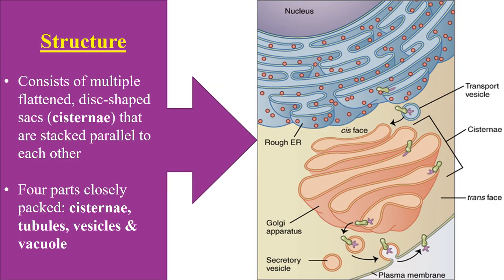Now let's understand the structure of the Golgi apparatus. We know that proteins are synthesized by ribosomes. As the protein is synthesized, it is sent to the endoplasmic reticulum to undergo modifications in the form of protein folding. Once folded, the protein has two options: it can either stay with the endoplasmic reticulum, or it can be shipped in a vesicle to its final destination. As the protein leaves the endoplasmic reticulum inside the vesicle, how does it know where to go? The vesicle carrying the protein needs some sort of tagging or marker to reach its final destination.